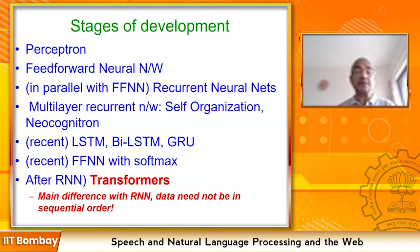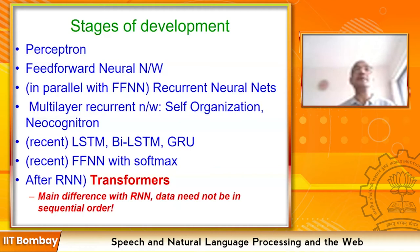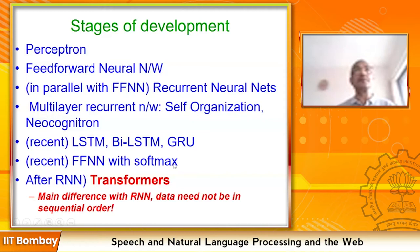Feed-forward networks were embellished with the softmax function. Early networks used total sum-squared as the loss function; softmax is based on probability — the difference between two probability distributions captured by cross-entropy. The most recent introduction is transformers. Unlike RNNs, which process a sentence word by word left-to-right, in transformers words can be given in any order, which better mimics how we understand sentences.